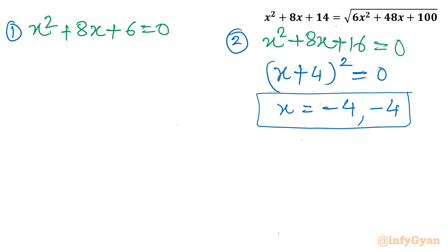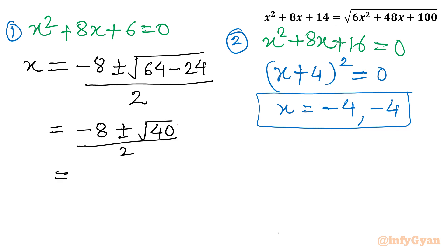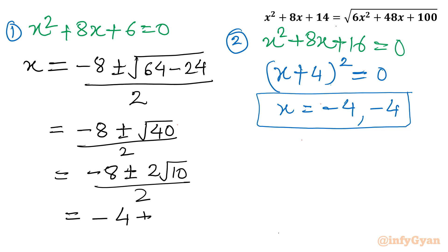Now let us solve equation 1: x² + 8x + 6 = 0. Applying the quadratic formula: x = (−8 ± √(64 − 24)) / 2 = (−8 ± √40) / 2. Since 40 = 4×10, √40 = 2√10. So x = (−8 ± 2√10) / 2 = −4 ± √10.